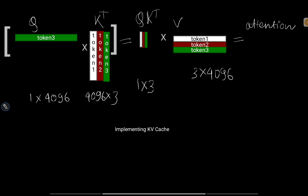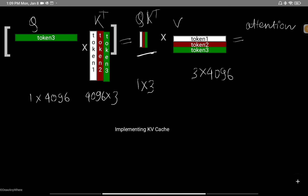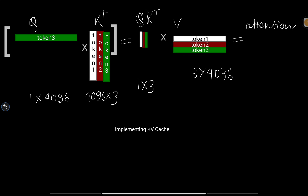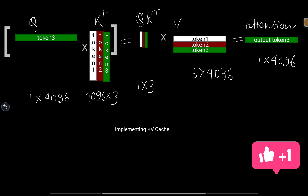At the third step, we replace the Q matrix token with token three, while preserving the cached K and V matrices containing all previous tokens. The Q·K^T operation now produces only a one×3 matrix (instead of three×three), which is multiplied with the three×4096 value matrix, resulting in only output token three with shape one×4096. We cache K and V matrices and replace only the Q token, resulting in fewer computations and faster inference.